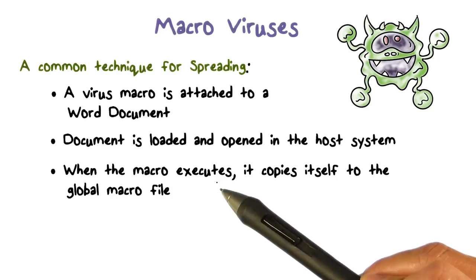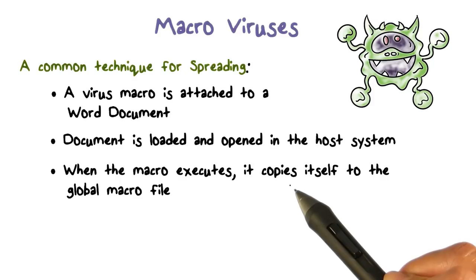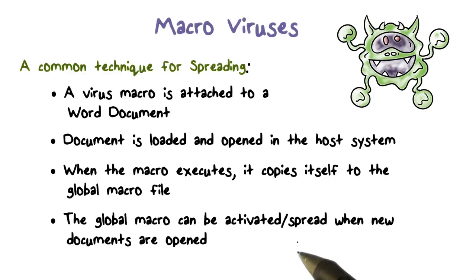When the macro virus runs, it can perform a number of malicious activities, such as sending the same Word document to a number of users in a user's address book as an attachment, and thus spreading itself. What's more interesting is that the macro virus can copy itself to the global macro file. As a result, whenever the user opens a new document or creates a new document, the global macro will be copied into that document — and that's another way that the macro virus can spread.